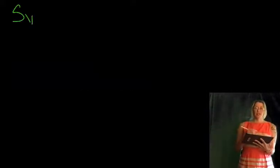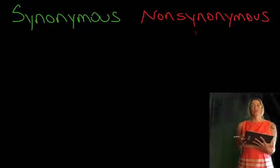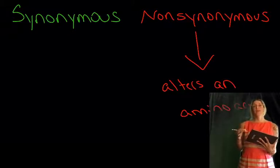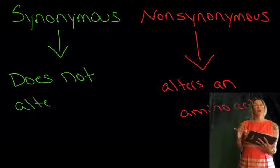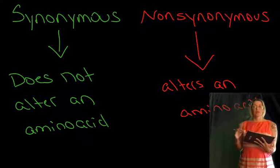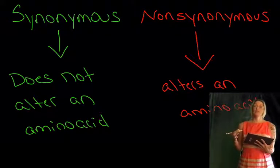We're going to overview mutations. First thing to consider is that there are two broad categories of mutations: synonymous mutations and non-synonymous mutations. Non-synonymous mutations alter an amino acid. This means there's some change in the sequence of the DNA.